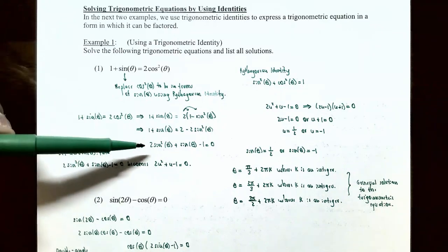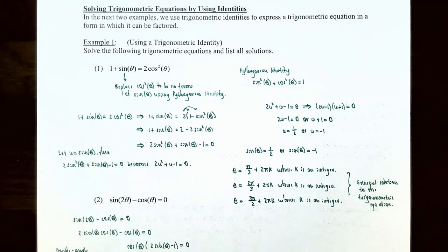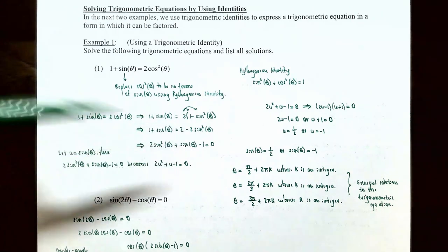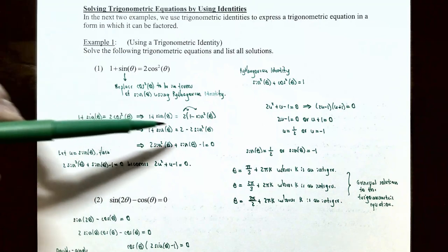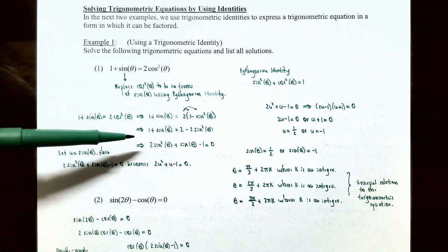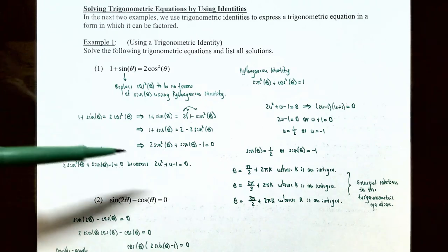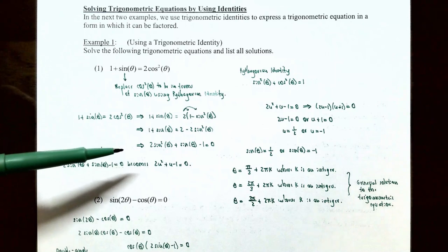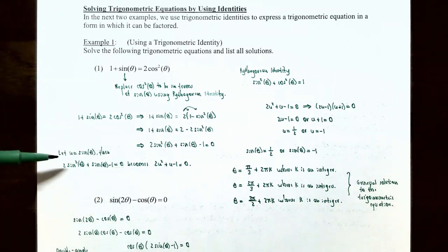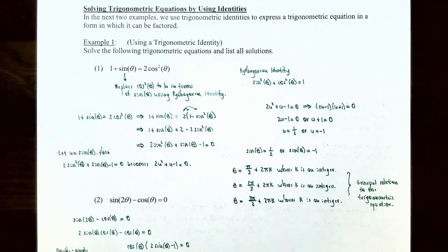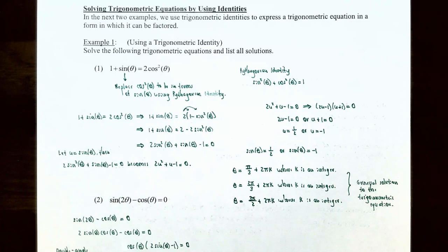So the left side is 2 times sine squared theta plus sine of theta minus 1, and the right side is zero. This is a trigonometric equation that's quadratic in form. If we let u equal sine of theta, then the equation becomes 2u squared plus u minus 1 equals zero — a standard quadratic equation.